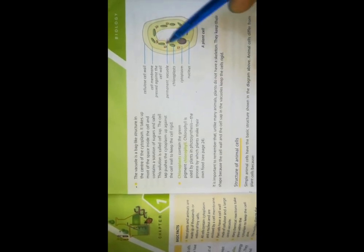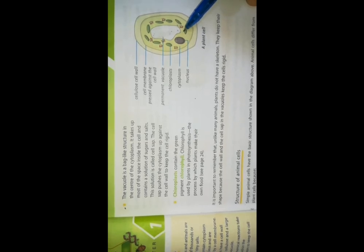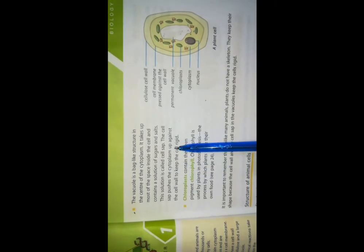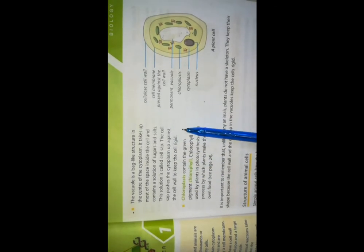There is also a vacuole, which is a bag-like structure occupying a large area in the cytoplasm. The vacuole takes up most of the space inside the cell and contains a solution of sugar and salts. This solution is called cell sap. The cell sap pushes the cytoplasm up against the cell wall to keep the cell rigid.